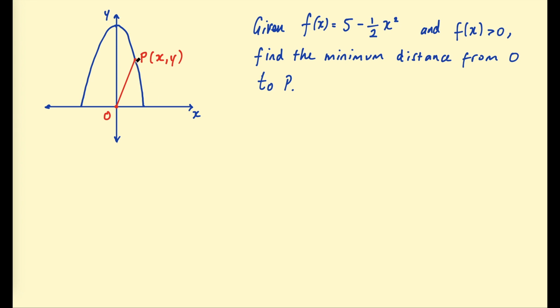So if we draw a right triangle, a vertical from P down to the x-axis, that gives us a right triangle with a base of x and a height of f of x. And the hypotenuse is O to P, so we can say O to P squared equals the base squared, x squared, plus the height squared, f of x all squared.